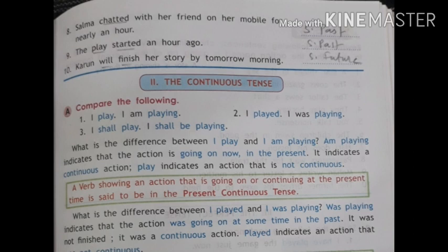Second part: the continuous tense. Continuous means the process going on, or in a progressive manner. Compare the following: 'I play' versus 'I am playing.' 'I am playing' indicates that the action is going on now in the present time — it indicates a continuous action. 'Play' indicates an action that is not continuous. A verb showing an action going on or continuing at the present time is said to be in the present continuous tense.